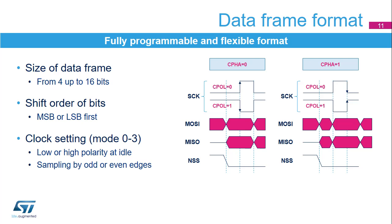Several parameters are used to set up the data format. Users can define the data frame size and the transmit order of the shift register. The clock can be set to one of four basic configurations defined in the Motorola SPI specifications. The combination of two bits controls the polarity and phase of the clock signal. When the phase control bit is cleared, data bits are sampled on the odd clock edges and the even clock edges synchronize the shifting of the next bit onto the data line. This is the opposite when the phase control bit is set. The clock polarity bit defines the idle state of the clock signal and which clock edge is used for data sampling or shifting.